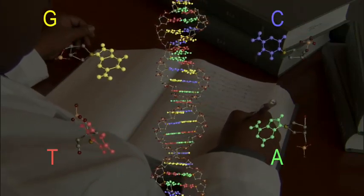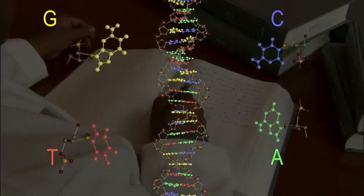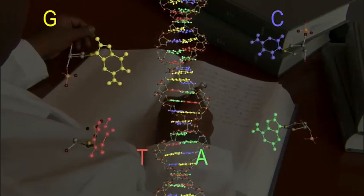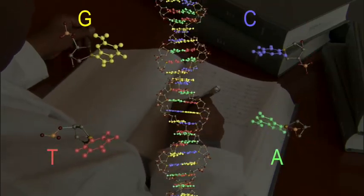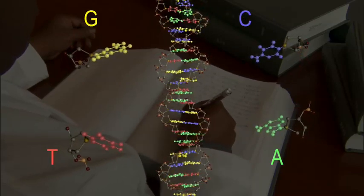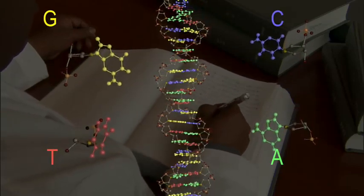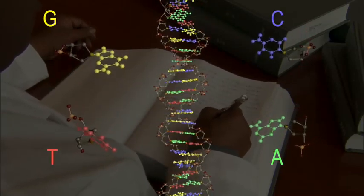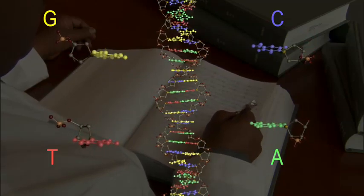There are two of these base molecules for each step on the ladder. And it is always either A and T together, or G and C together. So if you know one side of the step on the ladder, you automatically know the other side as well.